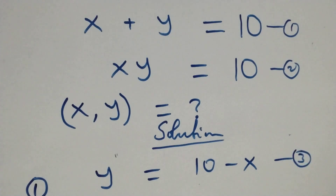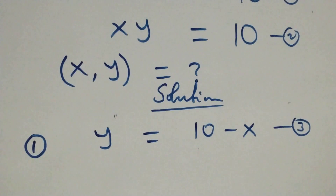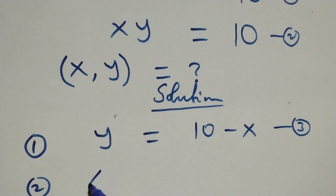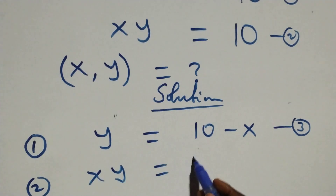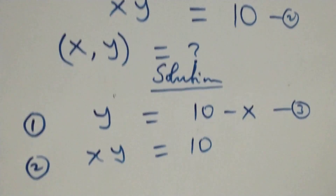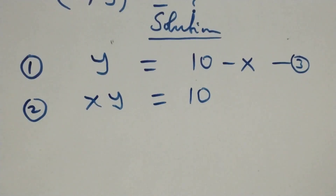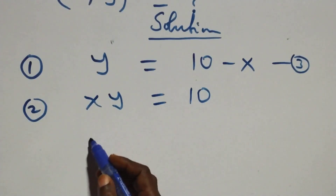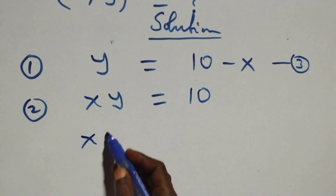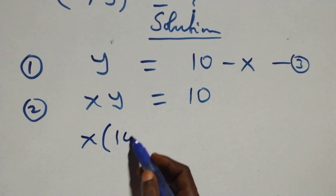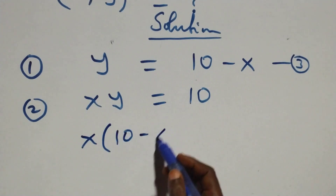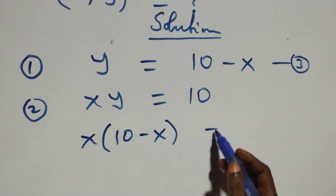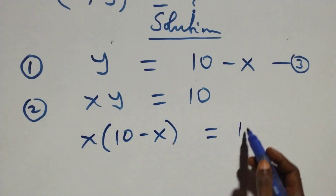Then also from equation 2 here, which is x times y equals to 10, we substitute equation 3. At this point we have x times y, which is now 10 minus x, equals to 10.